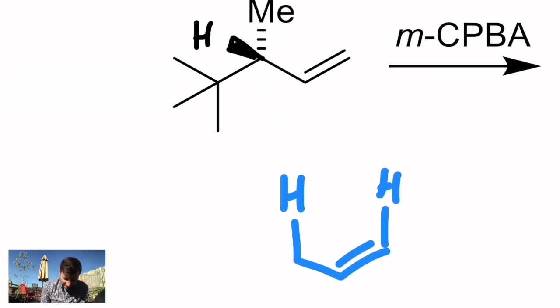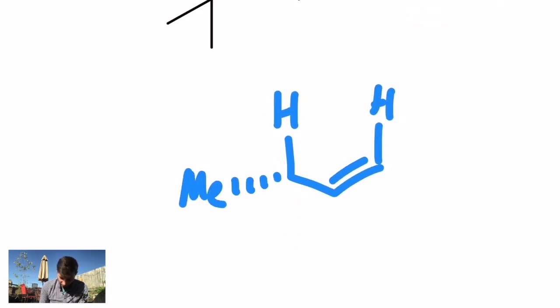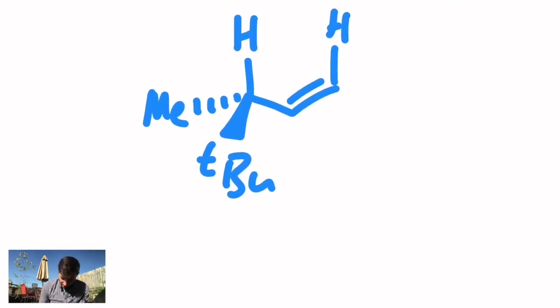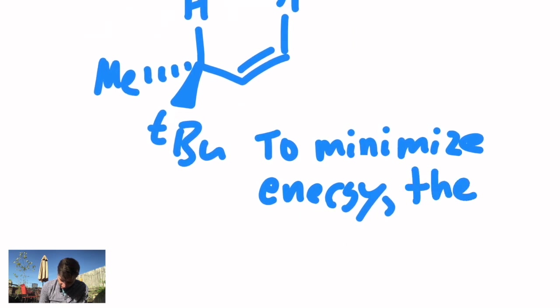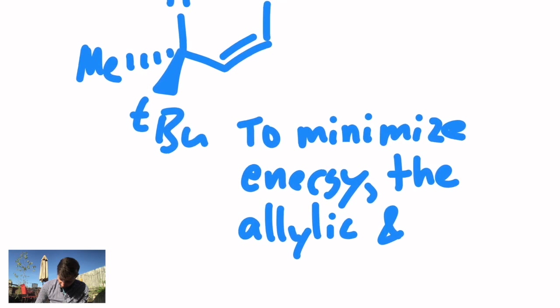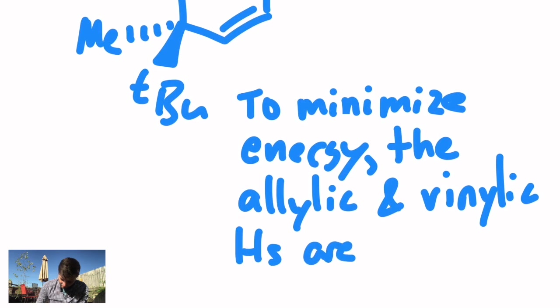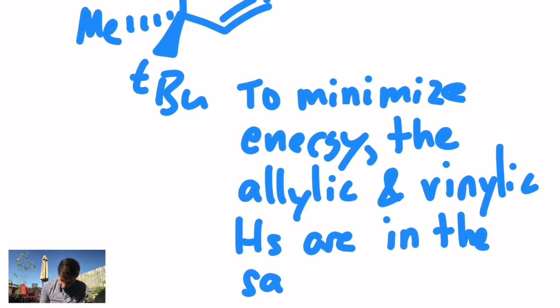So let's redraw that, and the way you redraw it as an energy minimum is to show the allylic H in the plane, and it's in the same plane as the vinylic H, one, two, three atoms away. That's why this is called a 1,3 or allylic 1,3 strain. What I've done is I've rotated it just a little bit so that the H is now in the plane. That means the methyl is now in the back of your screen, and the tert-butyl is coming out toward you. But that's the lowest energy conformation when we're considering a 1,3 strain. So, to minimize energy, the allylic and vinylic H's are in the same plane.